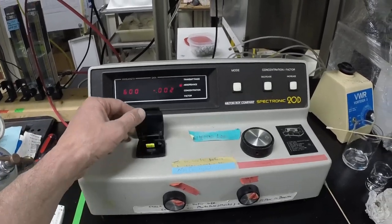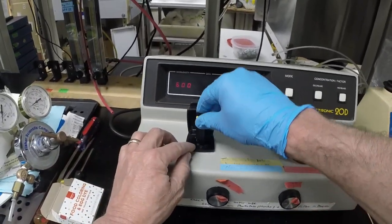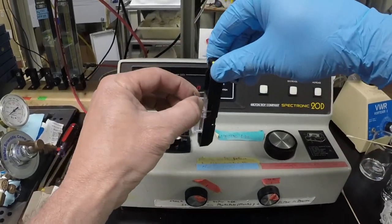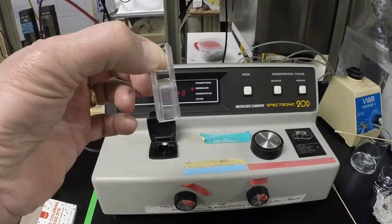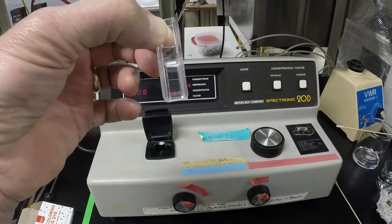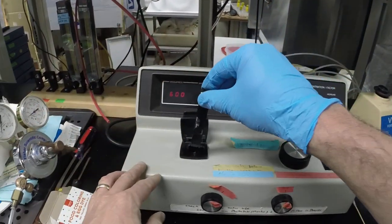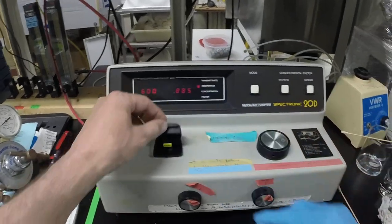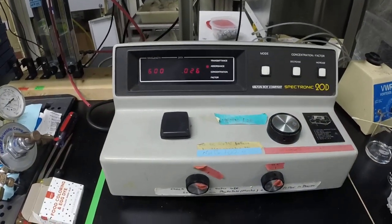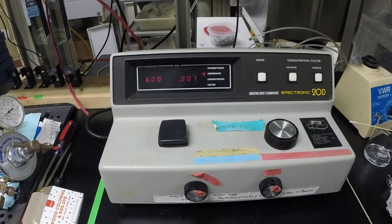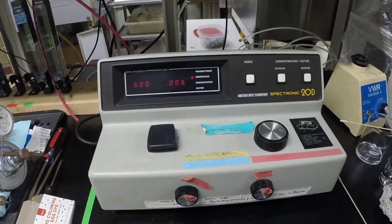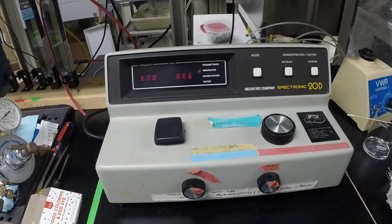If I now put a sample into the cuvette here, that has either cells or a dye or whatever in it, then when I place that inside there, it'll now read that absorbance on a scale spanned from zero to one, and that one centimeter path length. So that's how it functions.